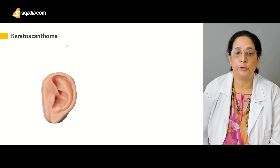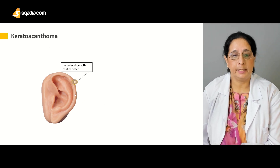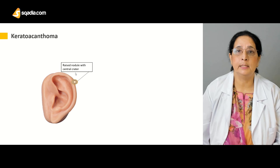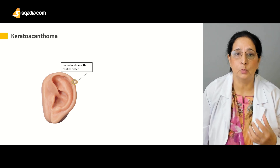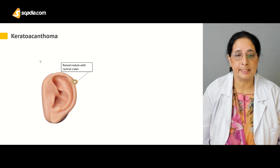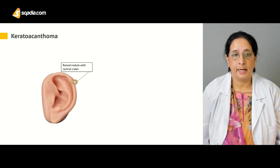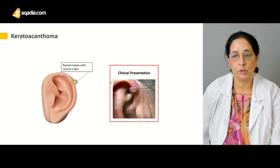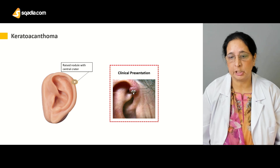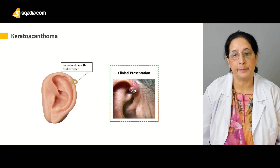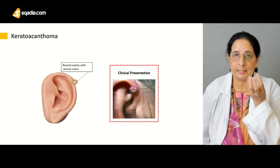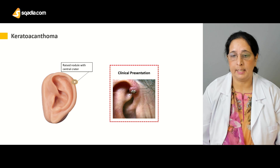Keratoacanthoma appears as a raised nodule with a central crater. You can see it is a nodule with a central crater. The clinical presentation shows a very clear picture of keratoacanthoma — a raised nodule or swelling with a central crater.